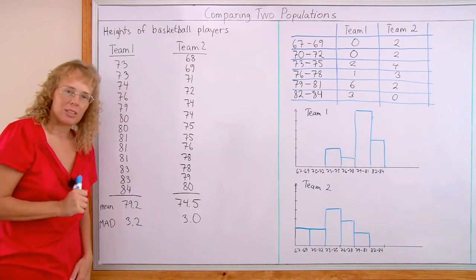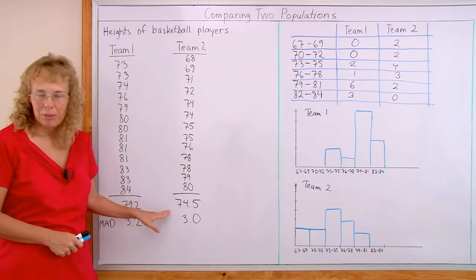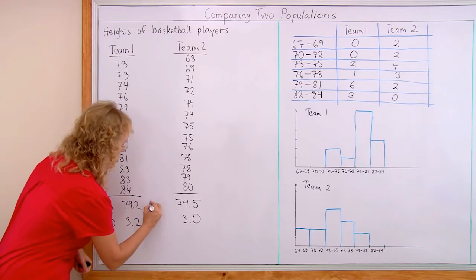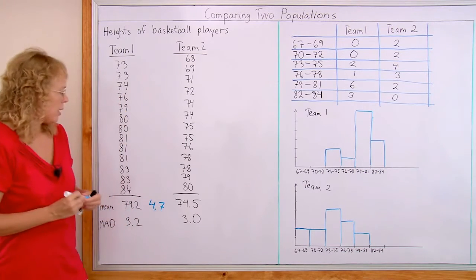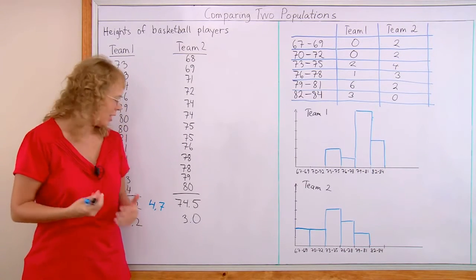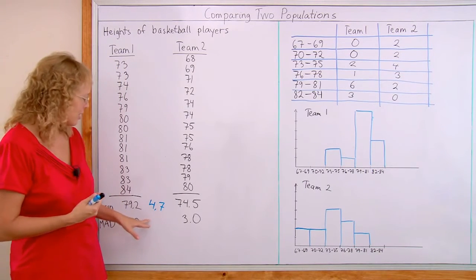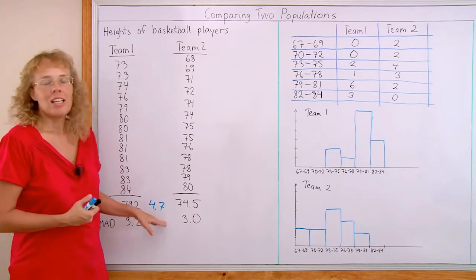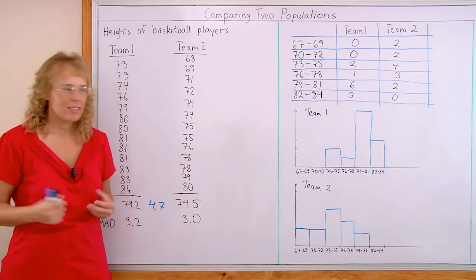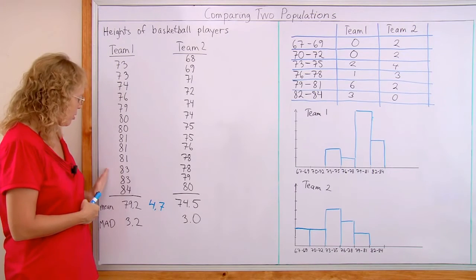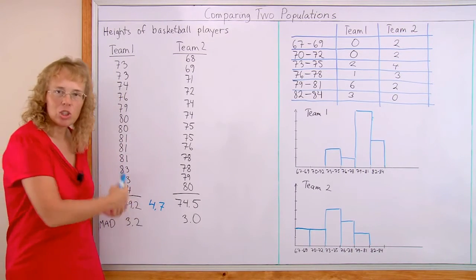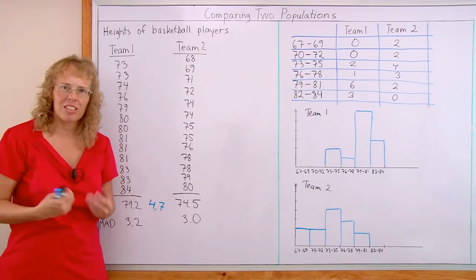One more thing that we're gonna just notice real quick is the difference between the means here is 4.7 inches. But, okay, since you know about people's height, you can tell that this looks like a significant difference in the mean heights. But what if you didn't know much about basketball or people's heights?